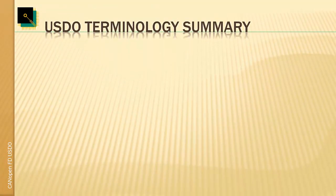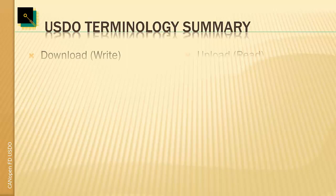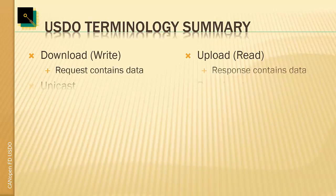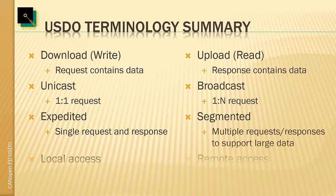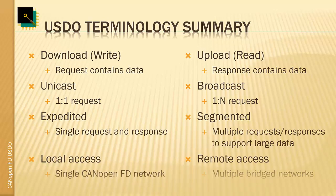Here's a summary of the most important terms used around the USDO - the universal service data objects. When we write data, the request contains the data - in USDO terms this is called a download. When we read data, the response contains the data - this is called an upload. We refer to unicast when it's a one-to-one or point-to-point request (one client, one server), and broadcast when one client communicates to all devices connected. Expedited transfer means a single request and response; segmented means multiple requests and responses to support larger data.